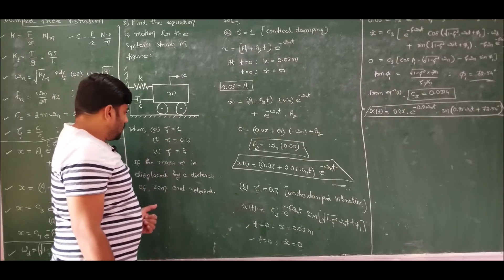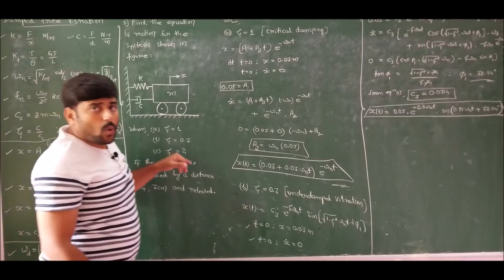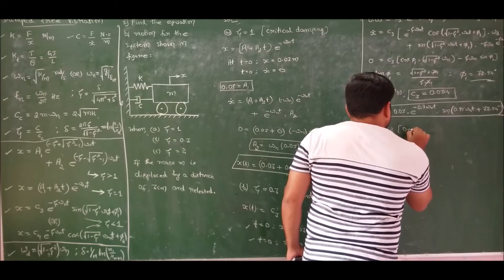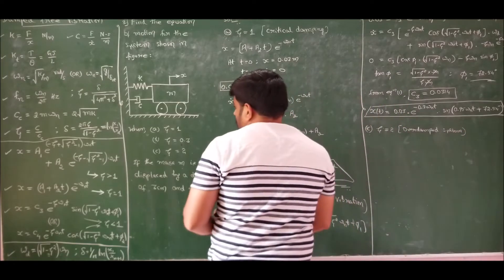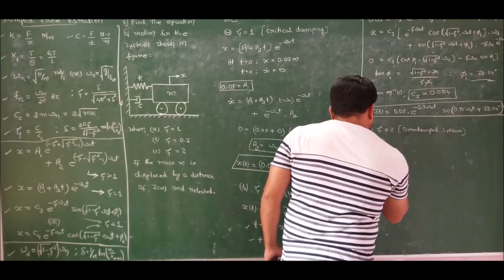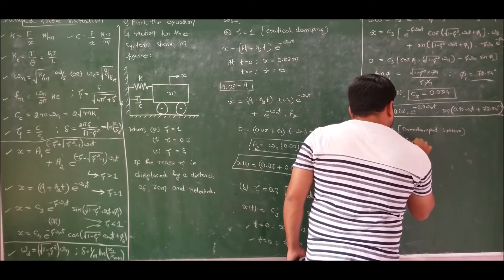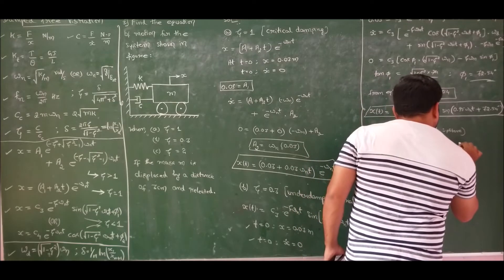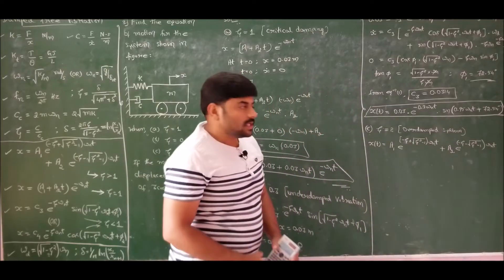Having completed case A and case B, moving ahead to case C: find the system response for ζ = 2. Since ζ is greater than 1, this is an overdamped system. For an overdamped system, the system response is: x(t) = a1·e^(−(ζ + √(ζ²−1))·ωn·t) + a2·e^(−(ζ − √(ζ²−1))·ωn·t). We have two constants a1 and a2 to determine.